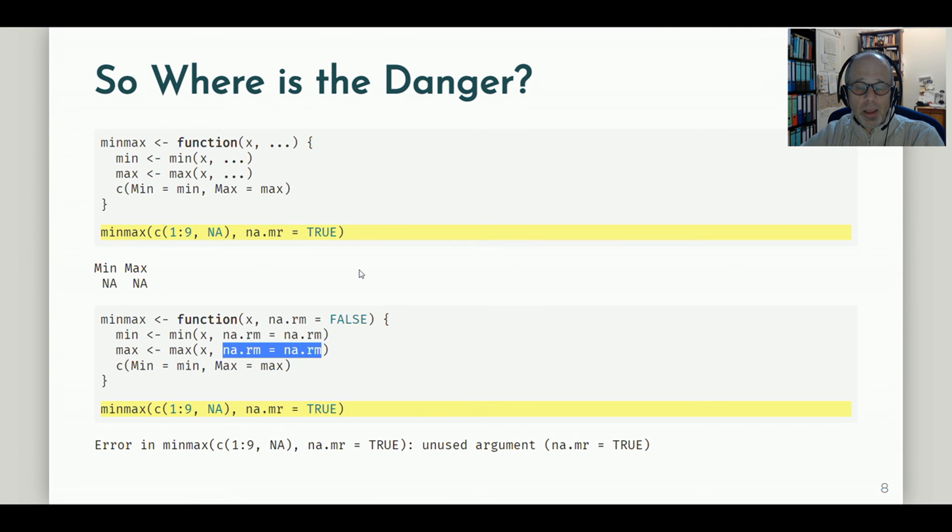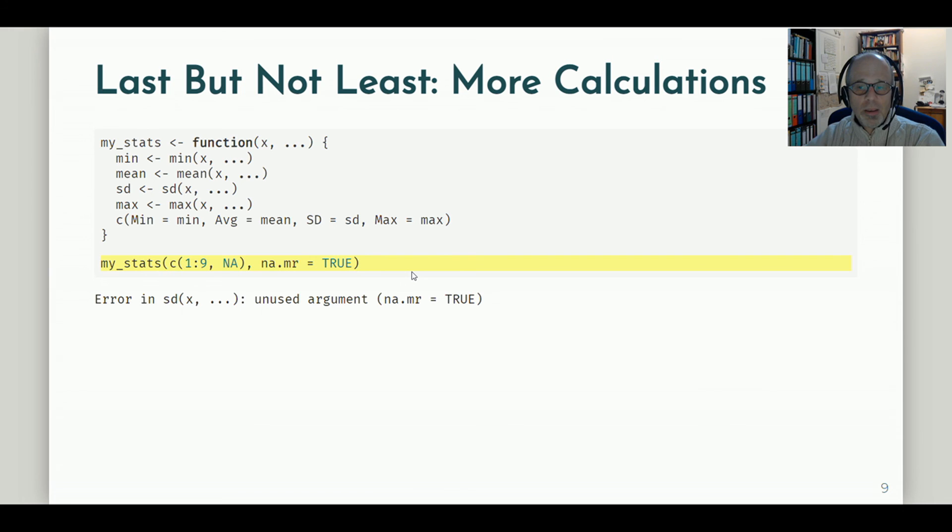That's basically it. We saw how to apply the dot dot dot notation, how useful it can be. I just want to extend a tiny little bit and do more calculations in our function. So here I call the function my_stats because I don't only calculate minimum and maximum, but also the mean and the standard deviation.